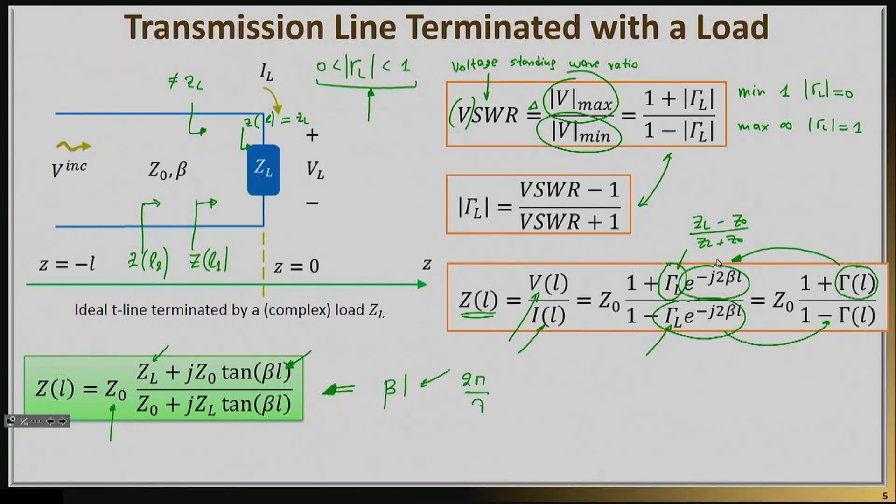which is 2π/λ times L. So as you can see, there are essentially two critical parameters. The physical length, which is right here - so basically how many centimeters, or millimeters, or micrometers away you are from the load. But it also depends on lambda, which is the wavelength.